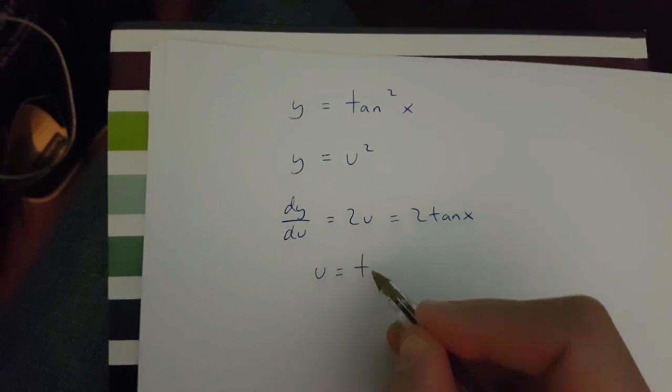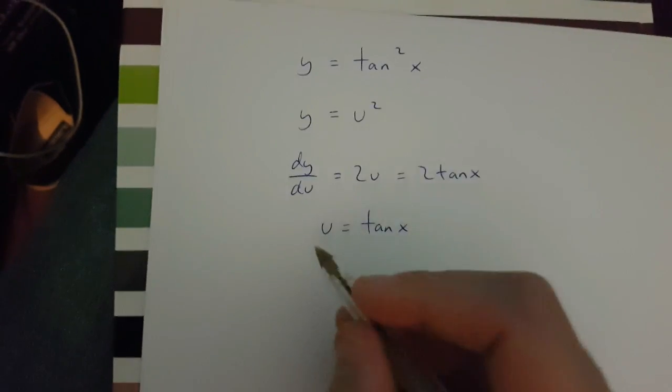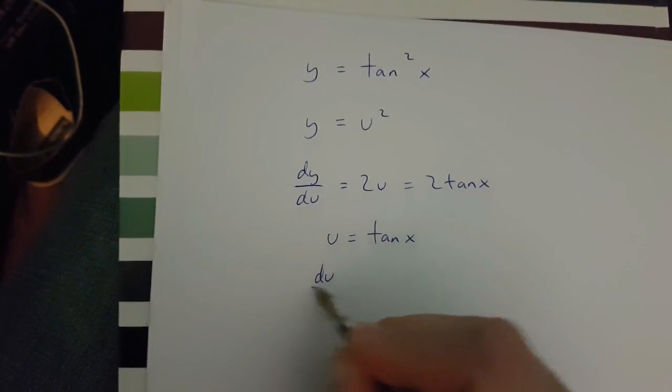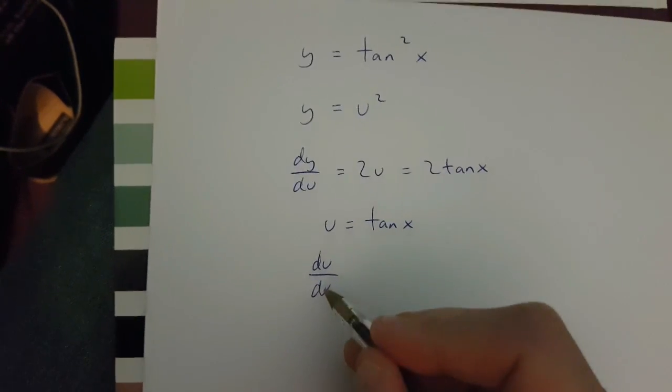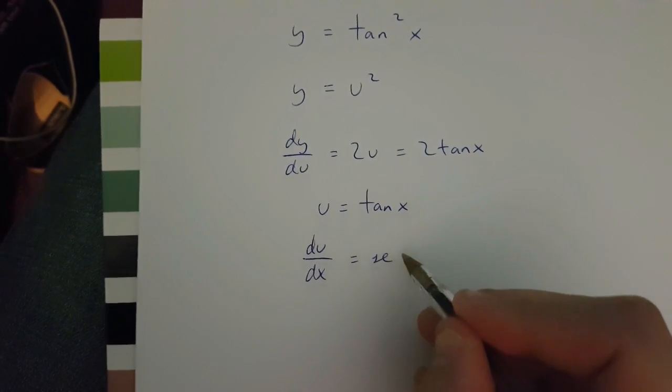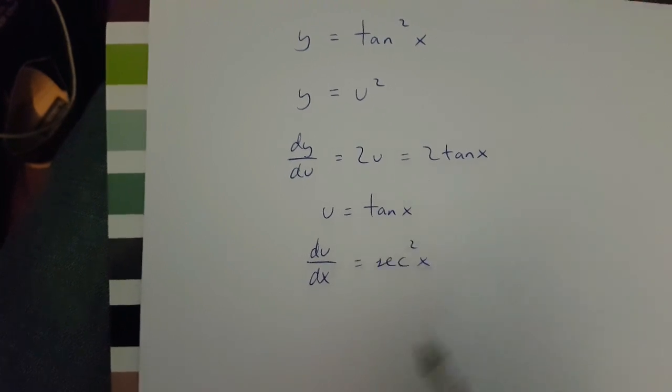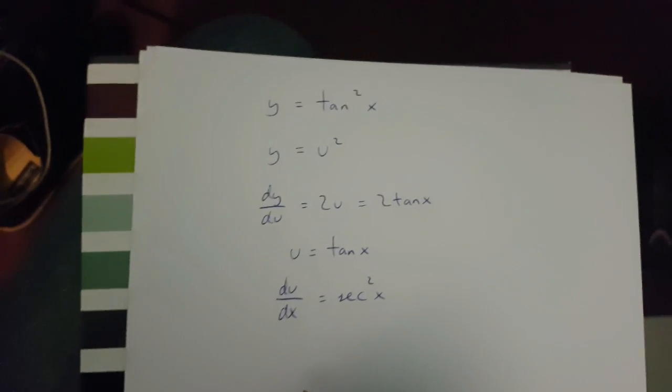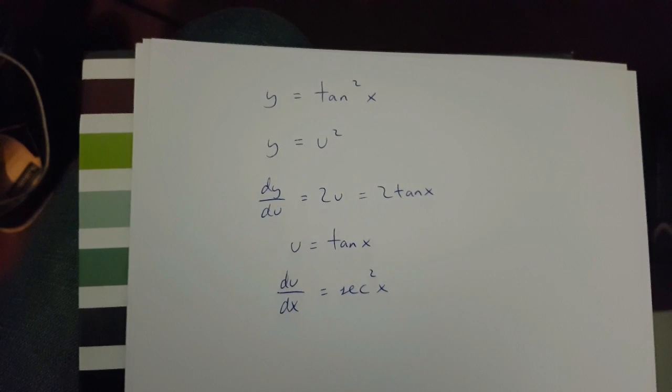Now if u is tan x, then du over dx is going to be equal to sec x squared. Now according to the chain rule,